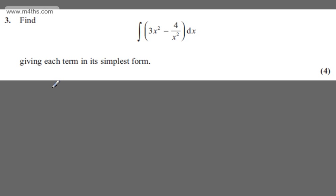This is question number 3 and it's worth 4 marks. We're asked to find the integral of 3x squared minus 4 over x squared with respect to x, giving each term in its simplest form.